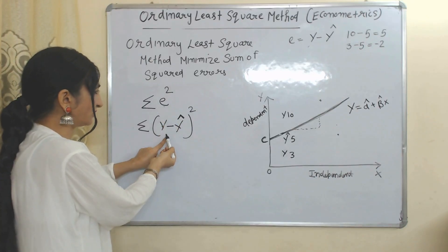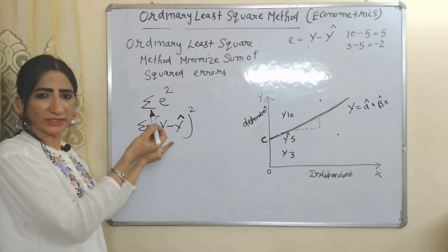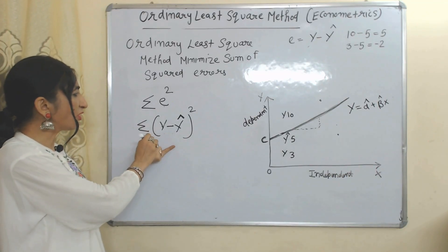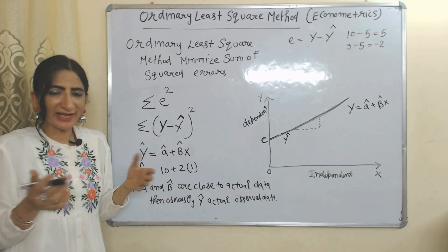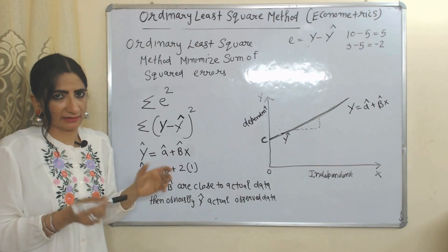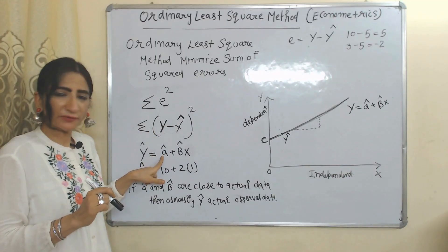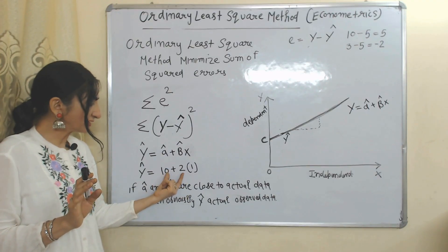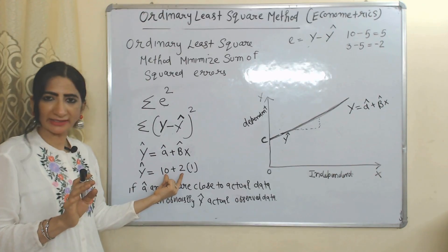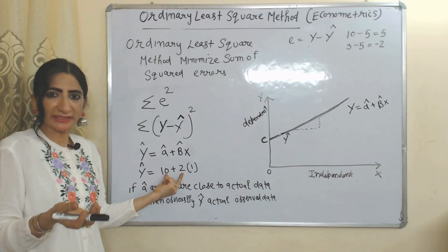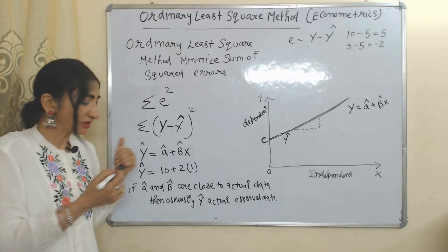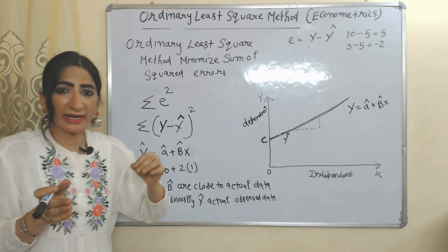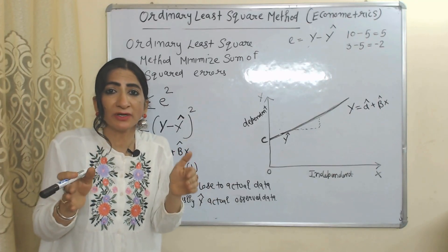In place of e, we can put Y minus Y-hat. The main aim of Ordinary Least Squares is to find the optimum values of alpha-hat and beta-hat by minimizing the sum of squared errors. For example, suppose the value of alpha-hat is 10 and beta-hat is 2. Since X is assumed constant, the value of Y-hat mainly depends on alpha-hat and beta-hat. If alpha-hat and beta-hat are close to the actual observed data, then Y-hat will also be close to the actual observed data, and our error will be minimum.